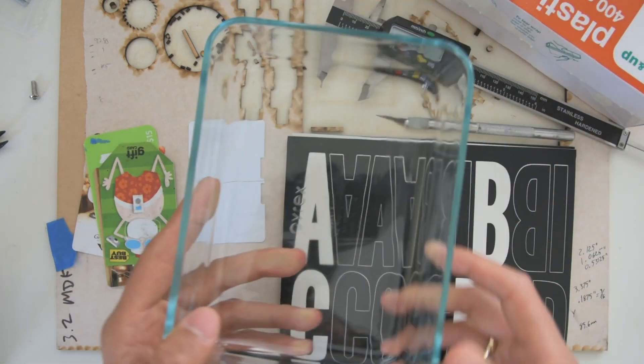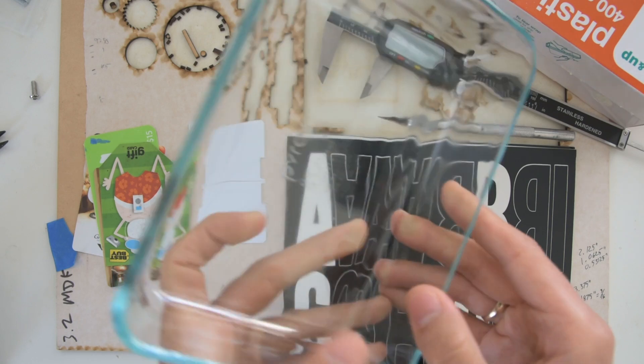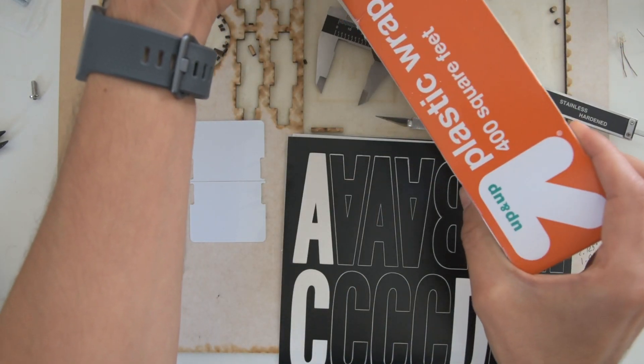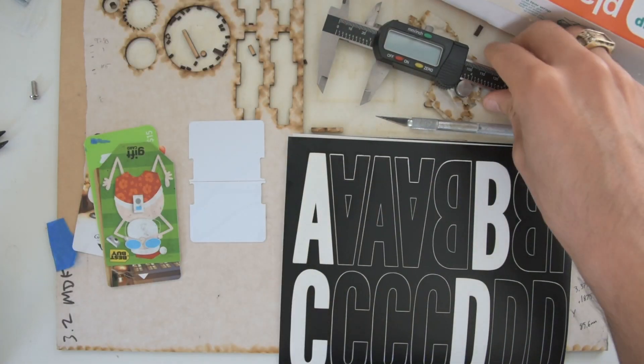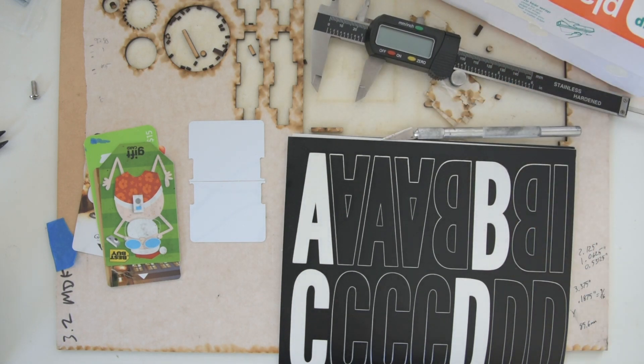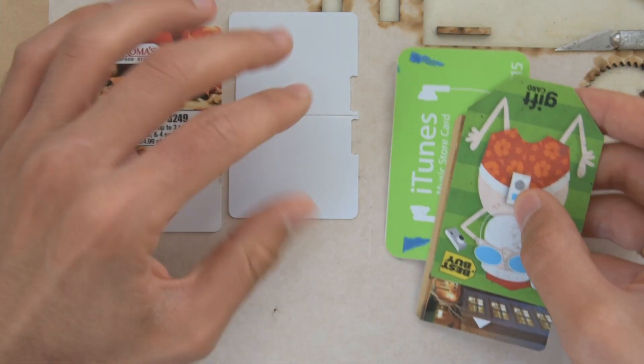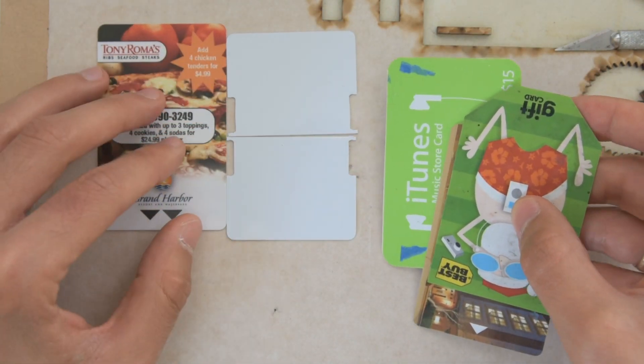And we're going to need a clear glass food storage container, some plastic wrap, and then a ruler or calipers and a hobby knife. So to get started, we're going to first make a little jig to hold these cards in place.